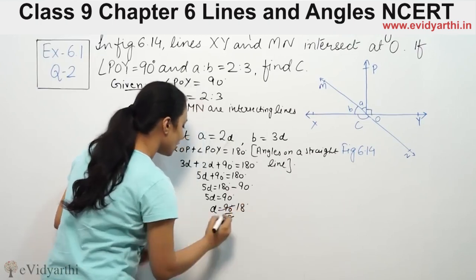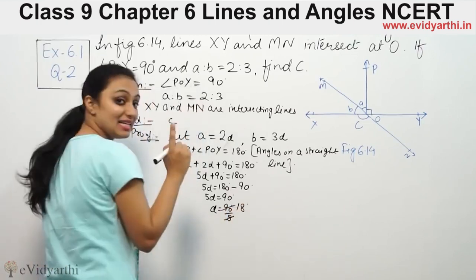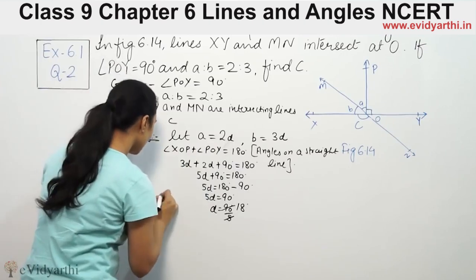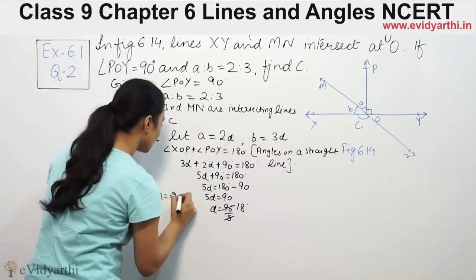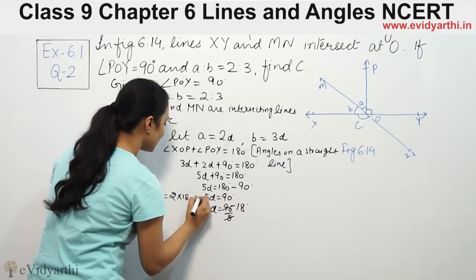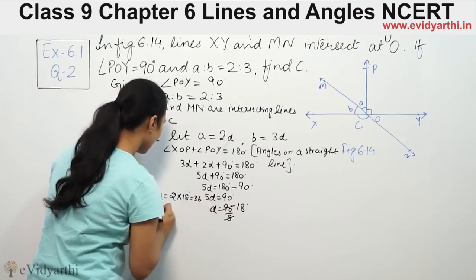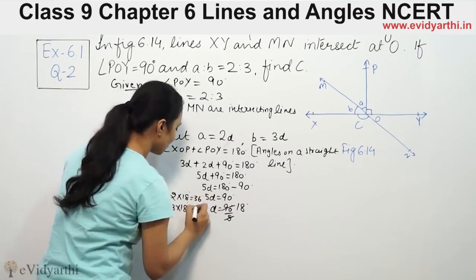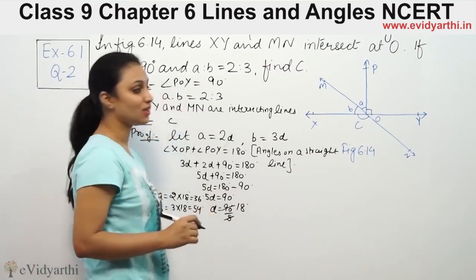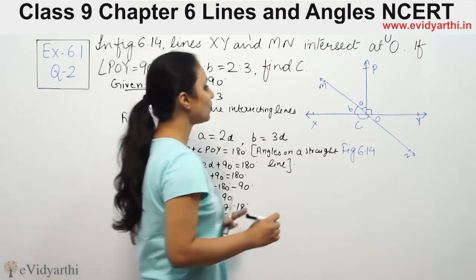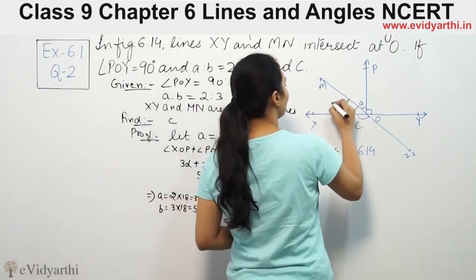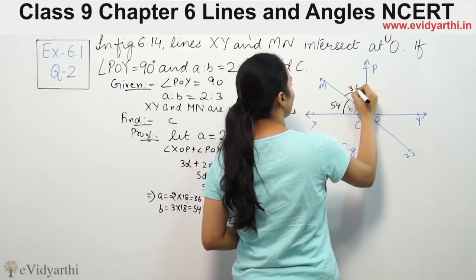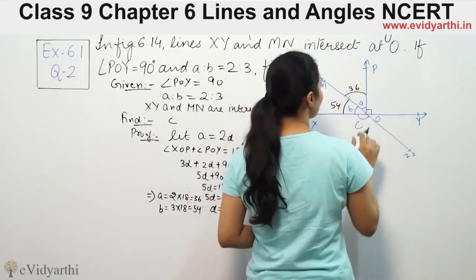So d = 18°. This implies a = 2 × 18 = 36° and b = 3 × 18 = 54°. So we now have angle a = 36°, angle b = 54°, and angle POY = 90°.